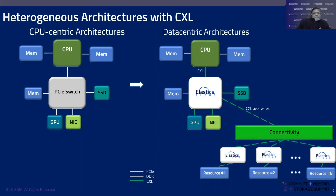With today's data growth, we need a newer, data-centric architecture. The CPU is no longer the only intelligent component inside the server system. All components attached via CXL can have intelligence, distributing control from the CPU to those components. Those components can also communicate with each other via CXL solutions — such as ours — including CXL over wires to connect multiple devices, increase sharing across multiple servers, and scale rack-to-rack within an aisle.